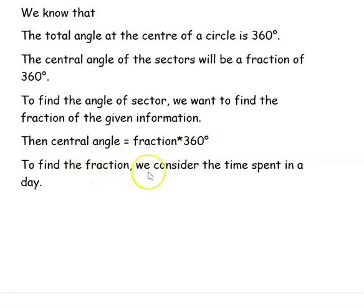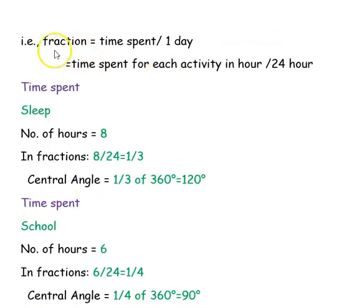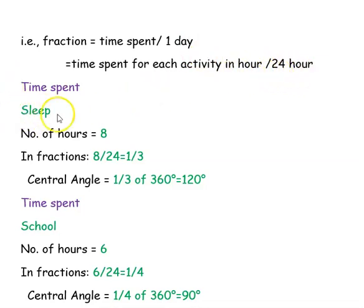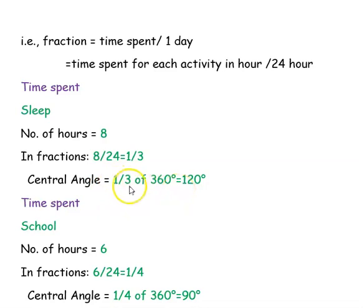To find the central angle, we consider the time spent in a whole day for each activity. The fraction for a given activity is: time spent for that activity in hours divided by total hours in one day, which is 24. For sleep, the number of hours is 8, so the fraction is 8 divided by 24, which equals 1/3. The central angle is 1/3 of 360 degrees, which equals 120 degrees.